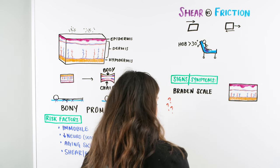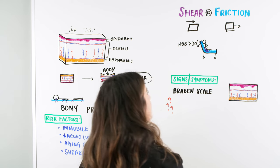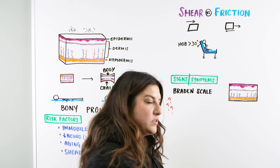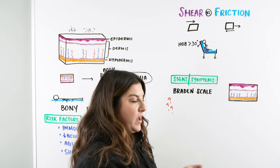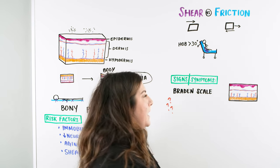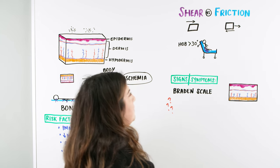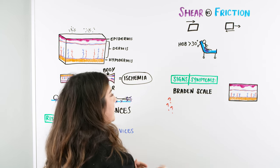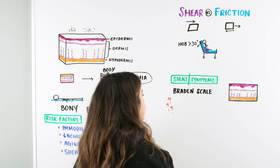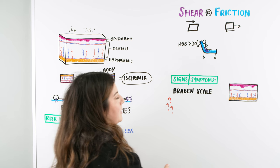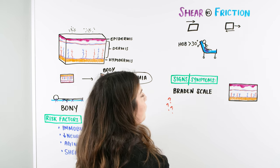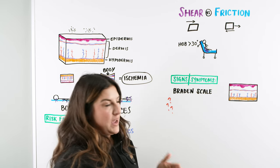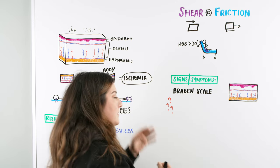To protect patients from shear and friction, we want to use a draw sheet on the bed so we can lift rather than drag the patient. Using a cloth chuck or pad underneath them — rather than plastic ones — is also helpful. And always use another nurse or tech to help move the patient up in bed.